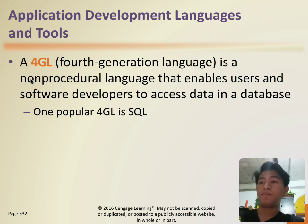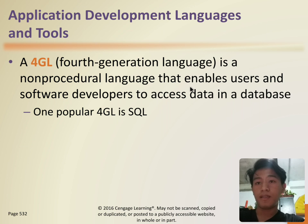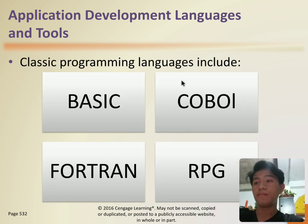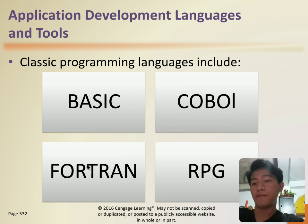A 4GL, or fourth generation language, is a non-procedural language that enables users and software developers to access data in a database. One popular 4GL is SQL. Classic programming languages include BASIC, COBOL, FORTRAN, and RPG.